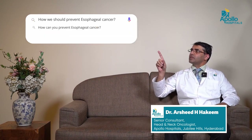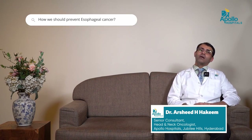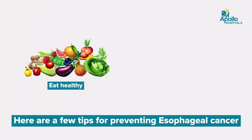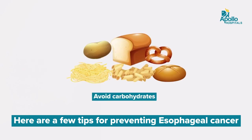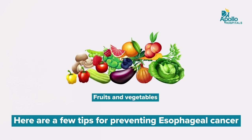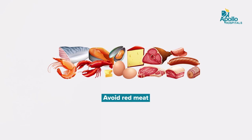How should we prevent esophageal cancer? The best thing a person can do is eat healthy and lead a healthy lifestyle. One should decrease carbohydrates in the diet and have more fruits and vegetables. This means a high-fiber diet, less carbohydrates, and less red meat — that will help in the prevention of esophageal cancer.